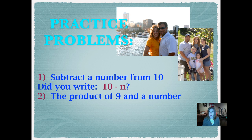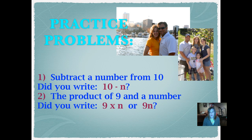Let's do another one. The product of 9 and a number. Go ahead and push play when you're ready. Did you write 9 times n, or 9n? Remember, if 9 is right next to the letter n, it means to multiply those two together. That would be the correct way to write an expression for 'the product of 9 and a number.' Product means to multiply.